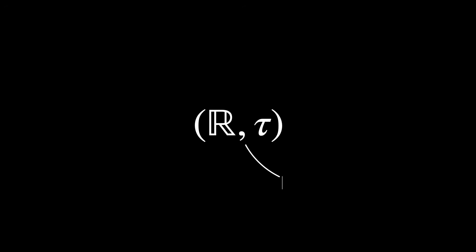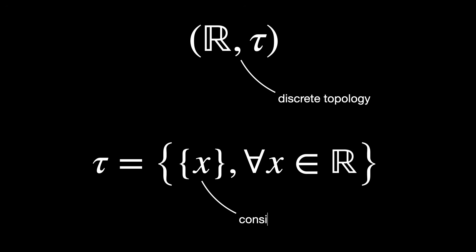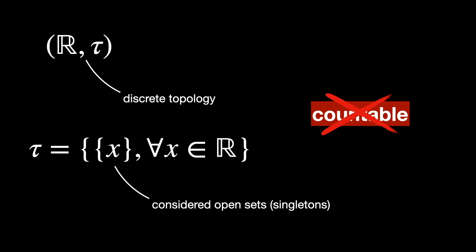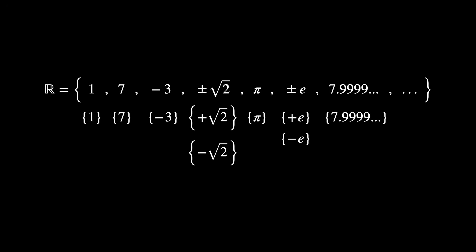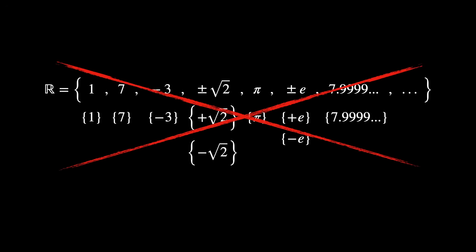Of course, this depends not only on the space itself, but mainly on the kind of topology chosen — the definition of open sets being used. A counterexample would be the set of real numbers with a discrete topology τ, which defines open sets as subsets of the real numbers with only one element, called singletons. This is certainly not countable, because if it were, then the real numbers themselves would be countable as well — and we know that the set of real numbers is uncountable.